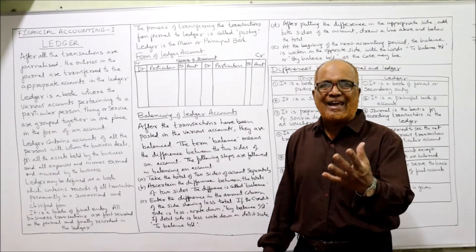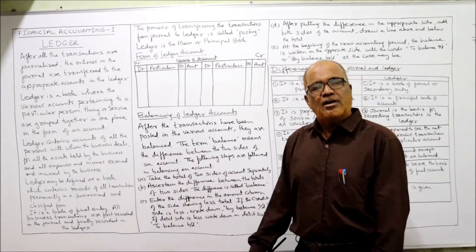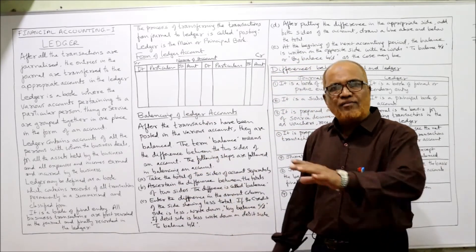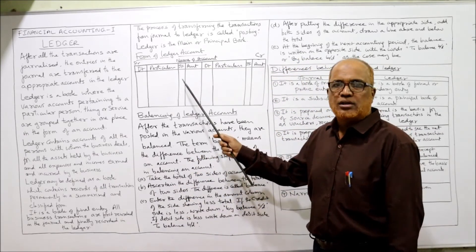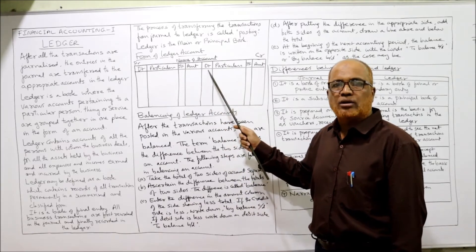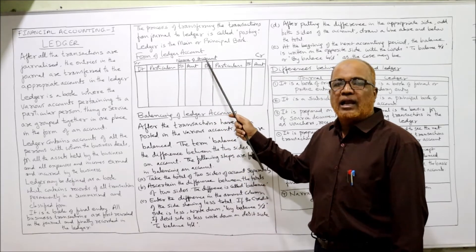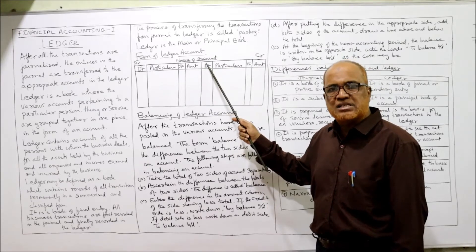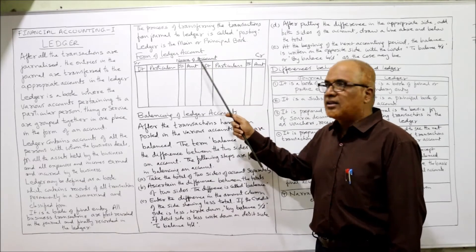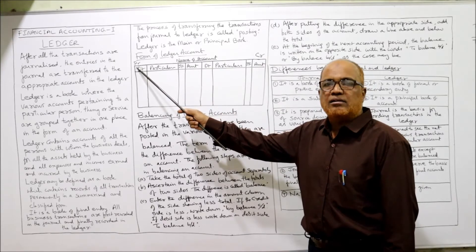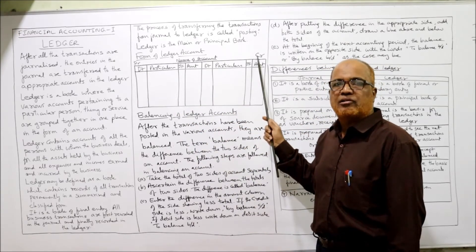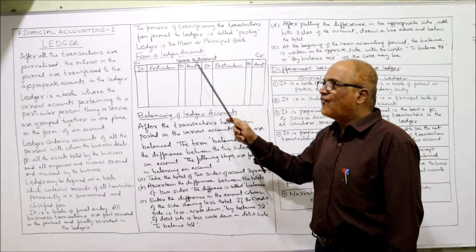Now, what is the format of the ledger account? First of all, we write the name of the account on the top — like salary account, rent account, Mr. X account, Mr. Y account. Then the left-hand side is 'Dr' (debit) and the right-hand side is 'Cr' (credit).